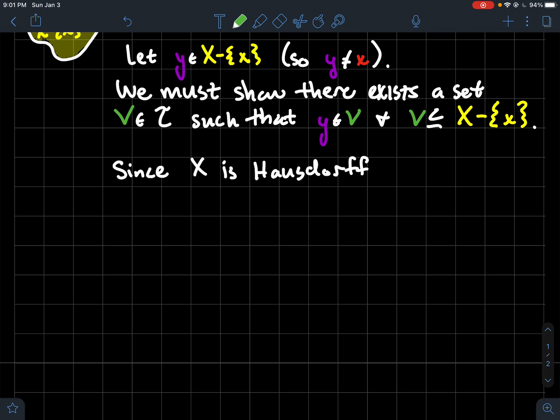So let's try to do that then. Well I know that the space X is Hausdorff and I've got two points, I've got x and I've got y. So what do I know? I know that they're not equal, so they're distinct, and so this Hausdorff property guarantees me the existence of two open sets U and V.